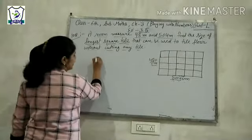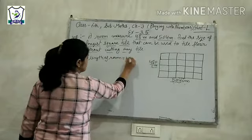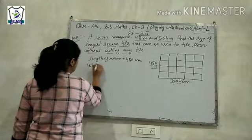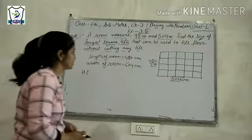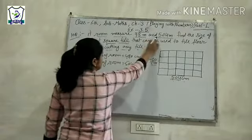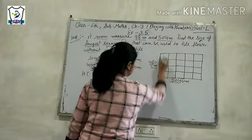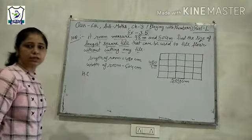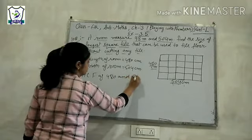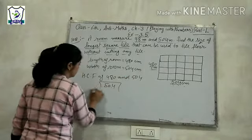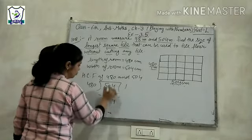Length of room is equal to 480 cm and width of room is equal to 504 cm. So we have size, length and width. We have to find the HCF of 480 and 504. 504 minus 480 equals 24.